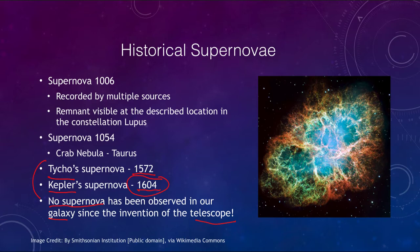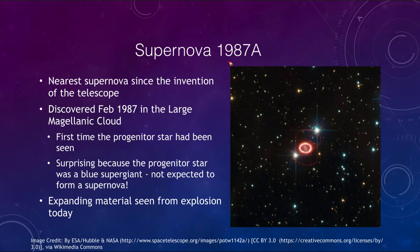We do see supernovae in lots of other galaxies and can still study them, but nothing up close. It would be very interesting for astronomers to study a supernova that was much closer. The closest example is the supernova known as 1987A — supernovae are named by the year discovered, then letters A, B, C going through the alphabet. This was the first supernova discovered in 1987, found in February of that year in the Large Magellanic Cloud, bright enough to be easily visible to the naked eye.